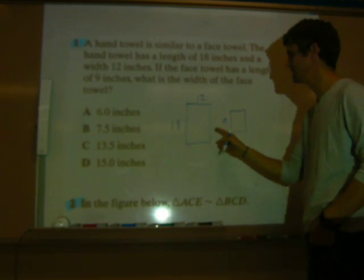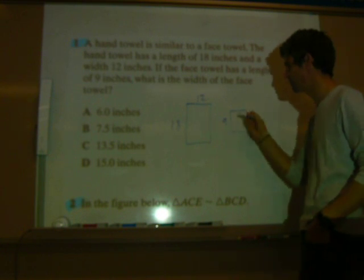Draw the figure and then we'll come up with a proportion to solve this. So we draw the regular towel, the hand towel, a length of eighteen inches and a width of twelve inches. If the face towel, it's going to be a little smaller, has a length of nine inches, then what is the width? First of all, you could look at this and say, okay, nine is half of eighteen. So therefore, this must be half of twelve, six.